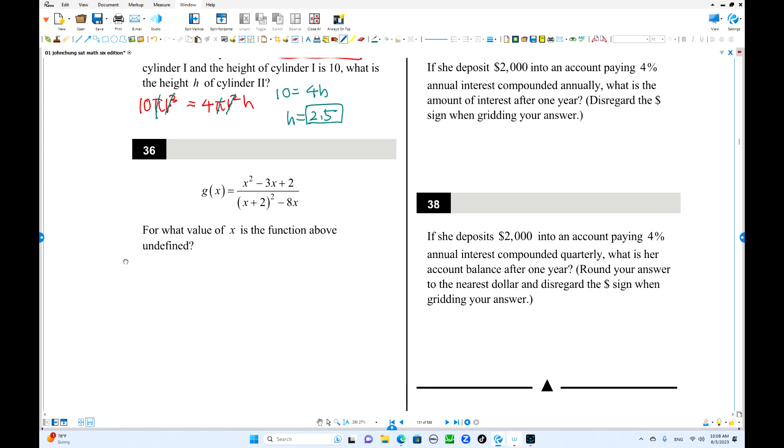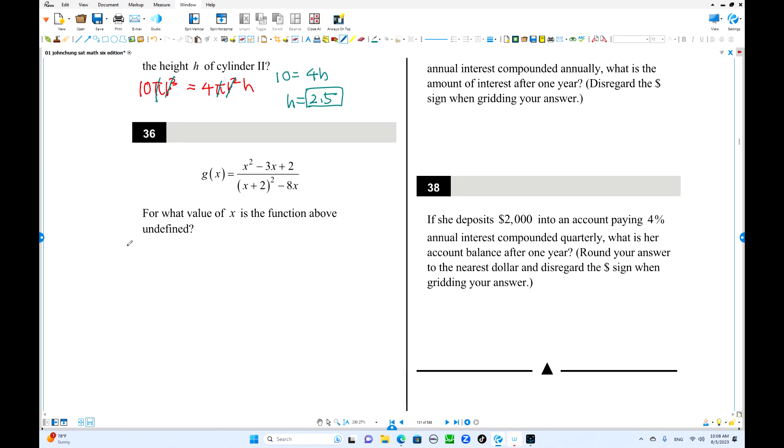Now number 36. For what value is the function above undefined? Already the denominator. Before you cancel it out, if you have a common factor, do not cross out. Anyway, the common factor is 0, still undefined. So you have to solve this one. So x squared plus 4x plus 4 minus 8x equals 0. So the denominator is 0, that is undefined. This is x squared minus 4x plus 4 equals 0. This can be factored. x minus 2 squared is 0. So x equals 2. At this point, x is 2, the denominator is 0. So 2 is the answer.